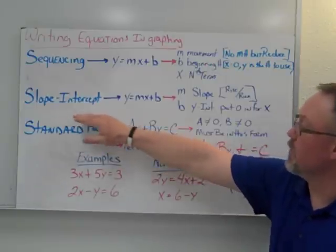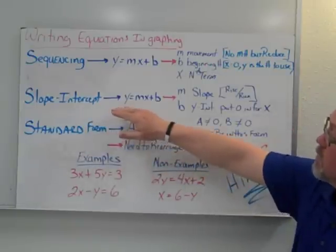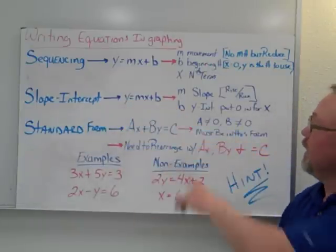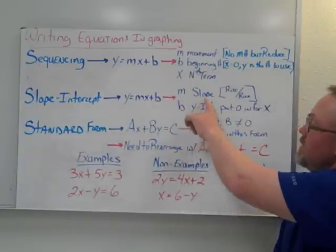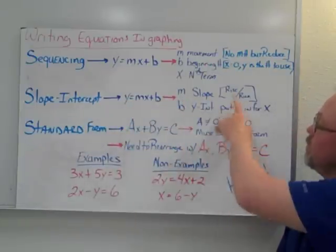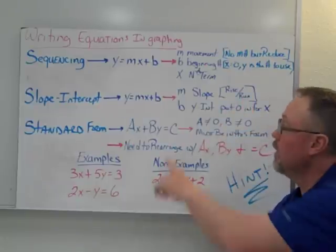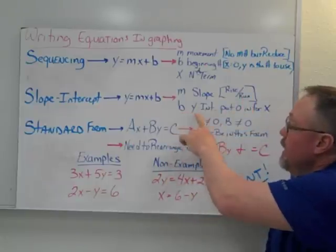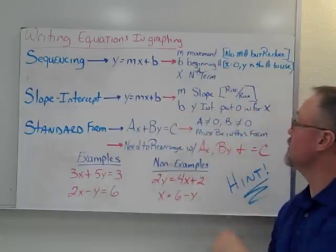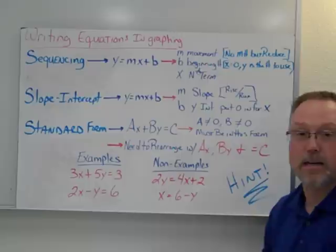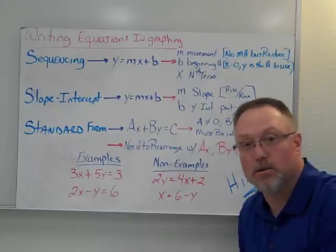We then moved into slope-intercept form, which again is y equals mx plus b. In this case, m now represents slope, which is rise over run. And b is our y-intercept — again, we put 0 in for x in our chart.